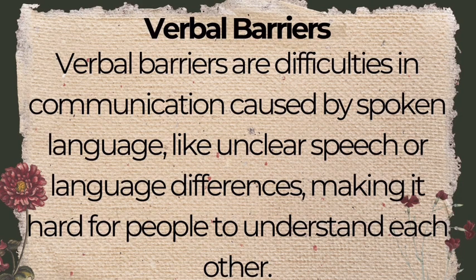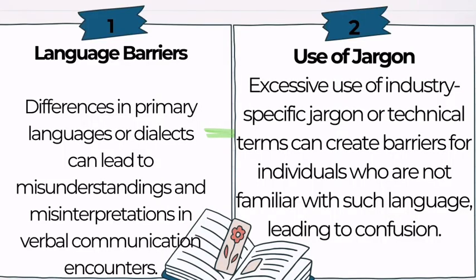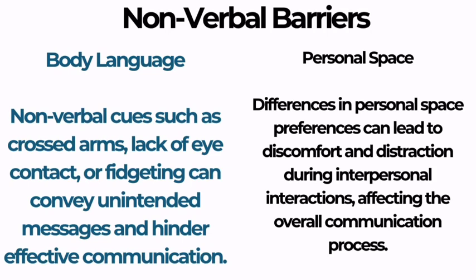Next are verbal barriers — obstacles that hinder effective communication through spoken language. One type is language barriers, where people from different countries struggle to communicate due to differences in their language. Another is use of jargon — specialized language or terminology used by a particular group or profession that may be difficult for others to understand, for example medical terms used in the medical field.